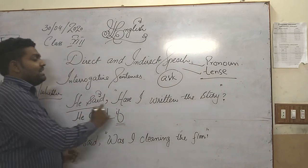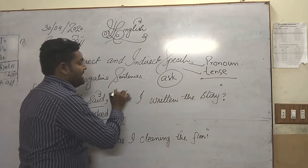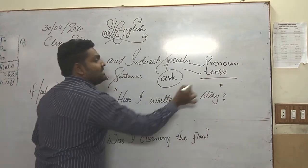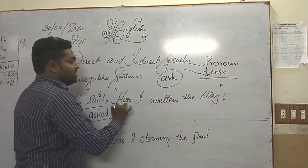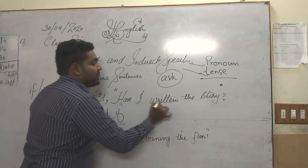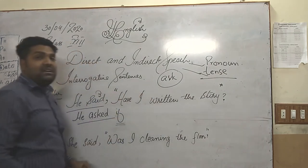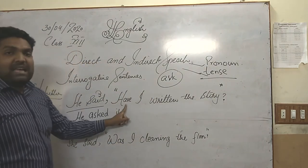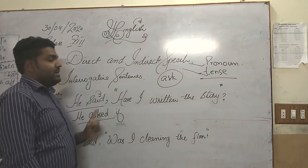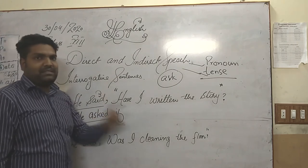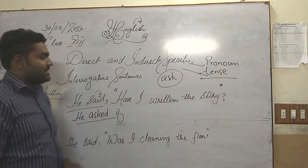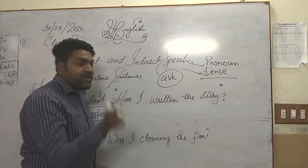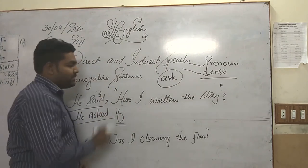In this sentence, the sentence which is written in the inverted commas — what is the tense? The tense of the sentence is have I written, which is the third form of the verb with has/have. So it is present perfect. Present perfect must be changed into past perfect.